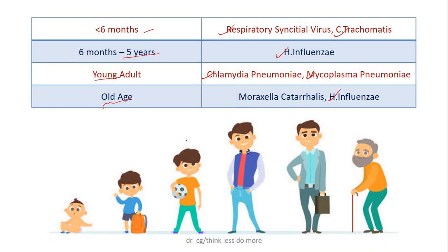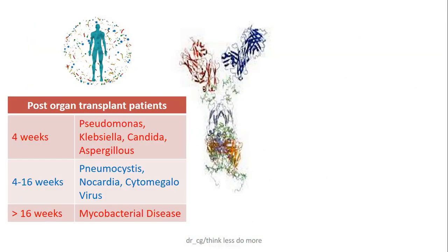If the patient has a recent organ transplantation history, up to 4 weeks, chances of lung infections with Pseudomonas, Klebsiella, or fungi like Candida and Aspergillus are common. Between 4 to 16 weeks, common pathogens are Pneumocystis carinii, Nocardia, and cytomegalovirus.